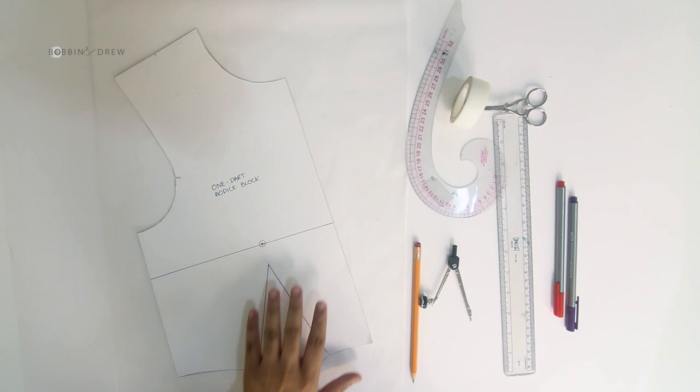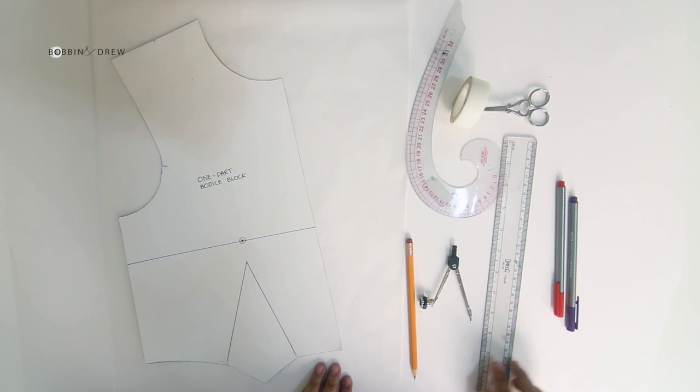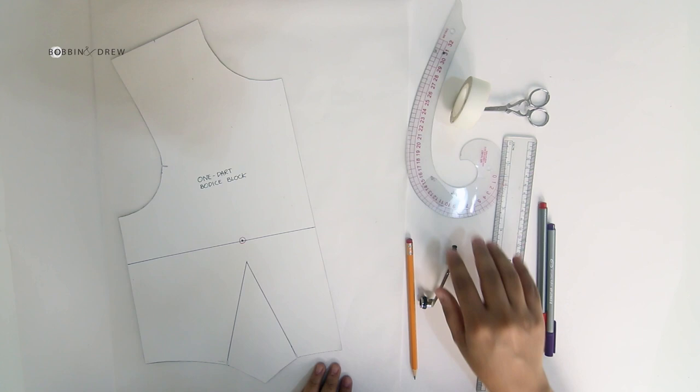We will need a one dart bodice block, pattern paper, pencil and eraser, a compass, a ruler, color pens of any color with a French curve, and magic tape and scissors.